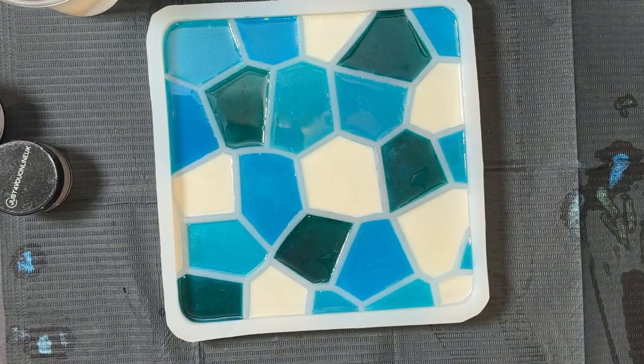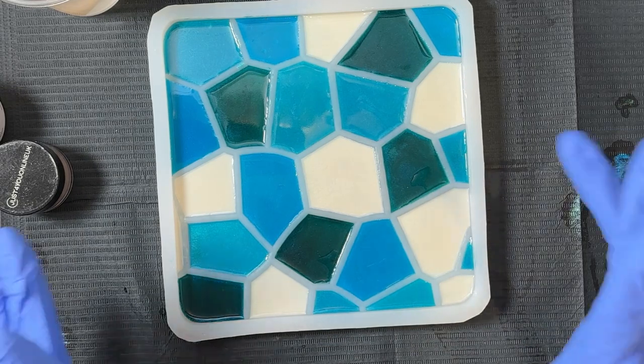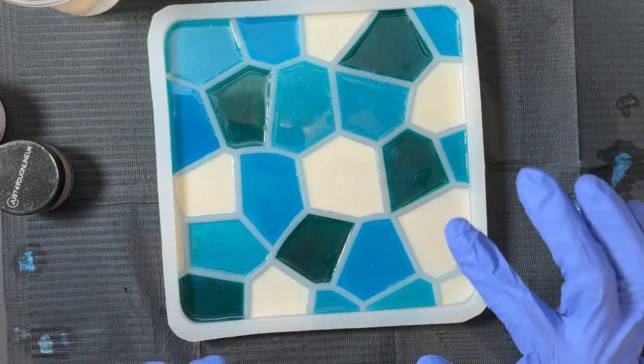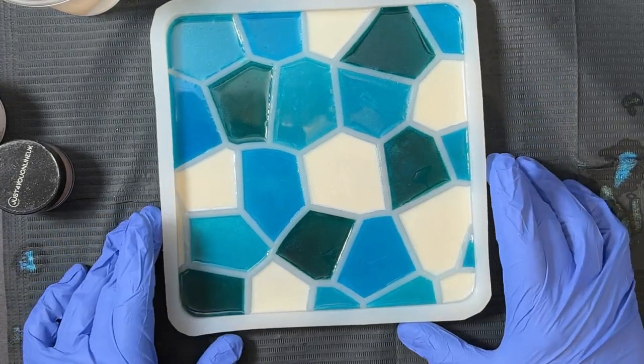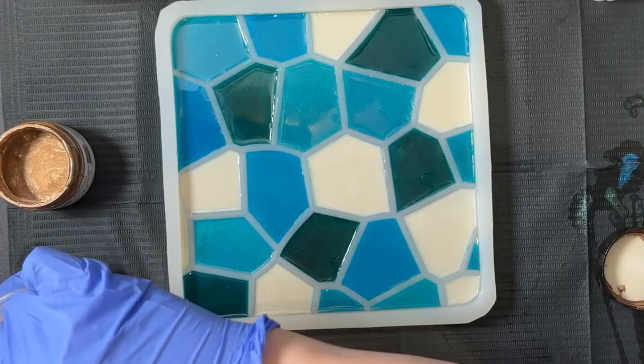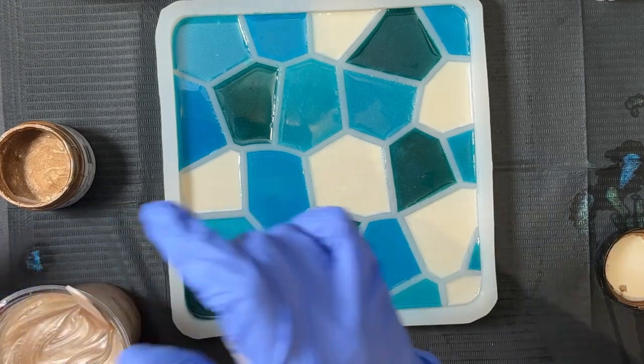Now that the resin has cured that first layer with the colors, I'm going back in with some additional resin and I want it to kind of look like sand. So I'm going to use this champagne pigment as well as the smoky quartz and just mix those together to see if I can get the color.